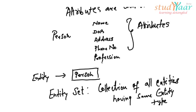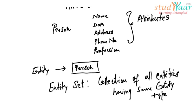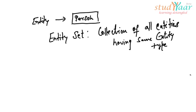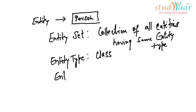that have a name, a date of birth, an address, a phone number and a profession. You can think of it like this. Entity type is a class and entity set is all the objects that have been created of this class.